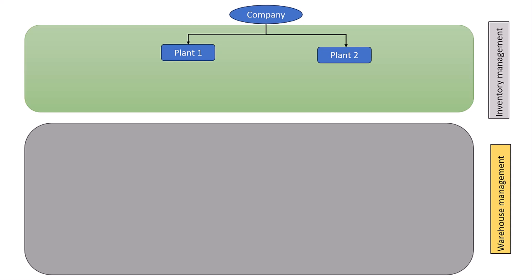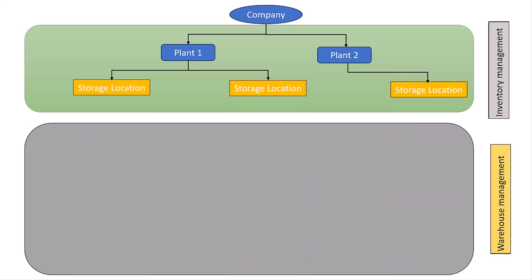When talking about the warehouse, a plant is where materials are stored, received, and sieved. Each plant can have multiple warehouses. The next organization structure is storage location. A storage location is the organization unit used to represent a physical location within a plant where materials are stored, managed, and tracked.